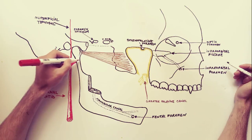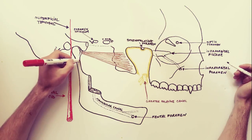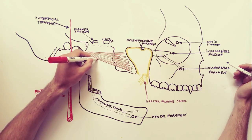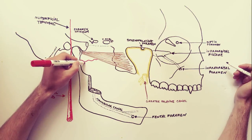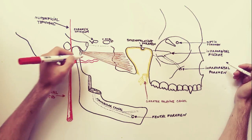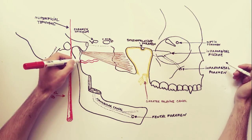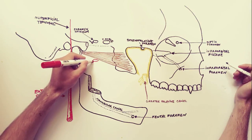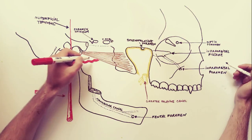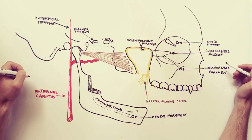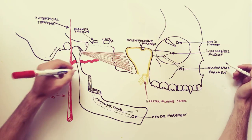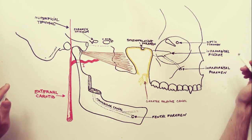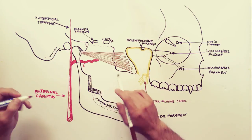The external carotid artery terminates as two branches: the superficial temporal, which is directed upwards, and the maxillary artery. The maxillary artery is much larger and leaves the external carotid at about a right angle, passing almost horizontally between the ramus of the mandible and the sphenomandibular ligament. In front of the ramus, the artery passes upwards across the lower part of the lateral pterygoid, but may cross either superficial or deep to the lower head of this muscle. In either position, it is embedded in the pterygoid plexus of veins. The maxillary artery has three parts.